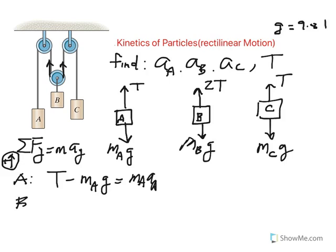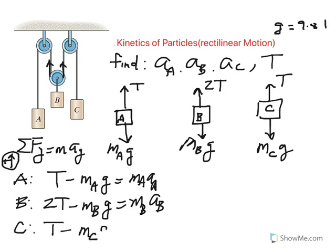For block B, similarly, we'd have 2T minus mass of B times G equal mass of B times acceleration of B. Remember, the right-hand side is mass times acceleration. And similarly, for C, we have T minus mass of C times G. That's the weight. Equal mass of C times acceleration of C.